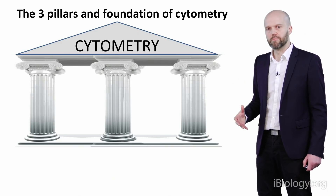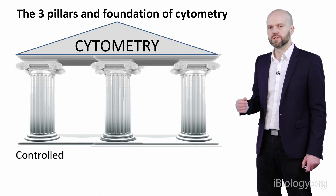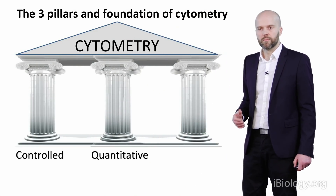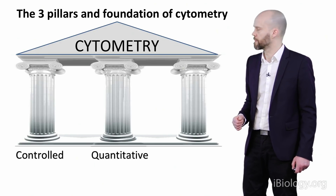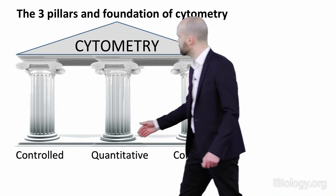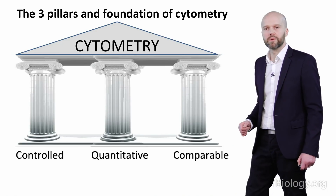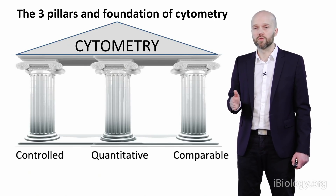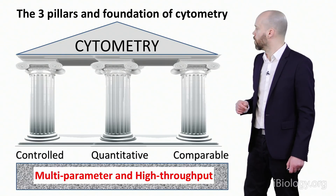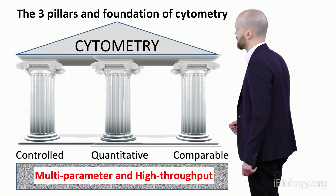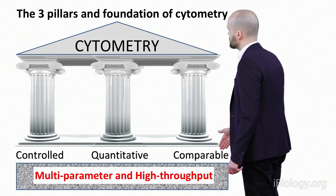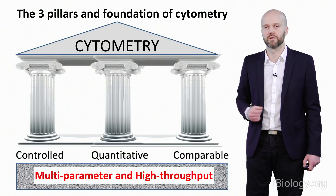Cytometry is formed on three different pillars. First, whatever we do, we need to take our measurements in a very controlled fashion. Next, cytometry should be at minimum semi-quantitative. If we follow this controlled and quantitative approach, our measurements are comparable — we can make fair comparisons between cells within a sample, across samples, and even across experiments done on different days. This is built on a foundation that cytometry is often multi-parameter and very high throughput, so we can sample as many cells as possible as quickly as possible.